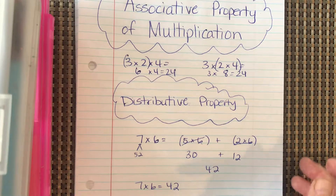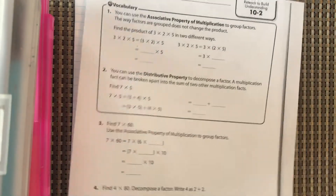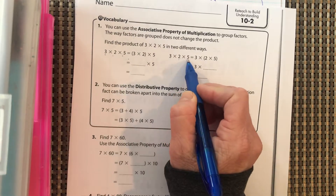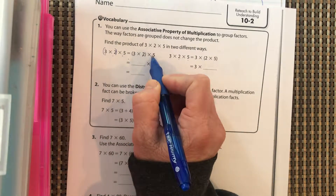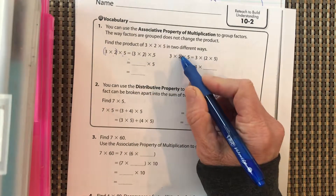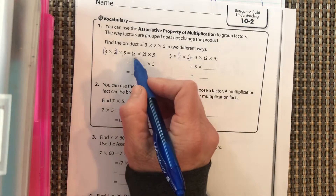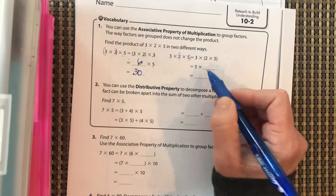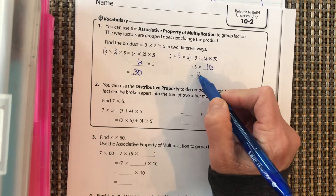We're going to use the distributive property to help us with multiples of 10 today. On the worksheet, for 3 times 2 times 5, I can multiply the 3 times 2 first, then multiply by 5, or multiply the 2 times 5 first, then multiply by 3 — either way I get the same answer. So 3 times 2 is 6 times 5, which is 30. Or 2 times 5 is 10 times 3, which is also 30.